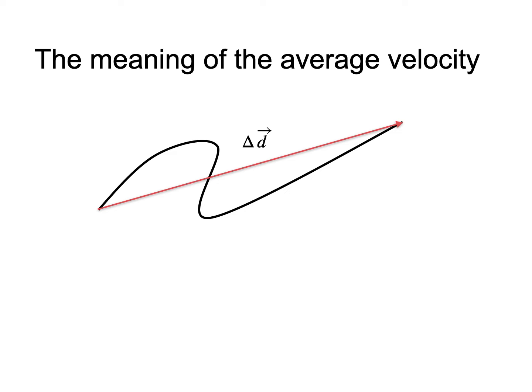Any trajectory that passes through the initial and final locations, and for which it took the same amount of time to travel from the initial position to the final position, will give the same value for the average velocity.